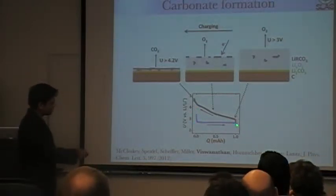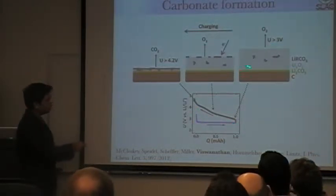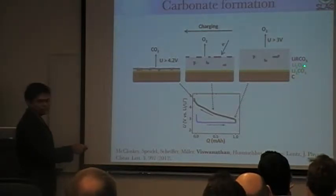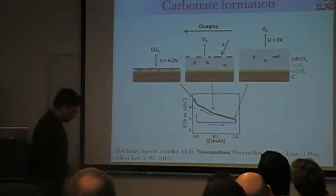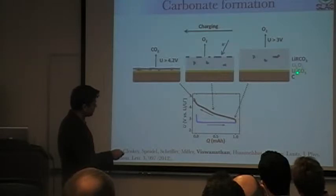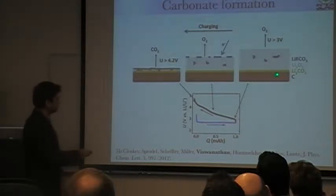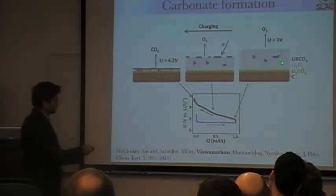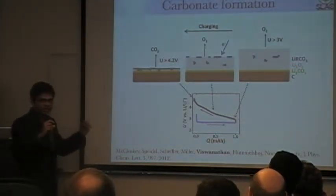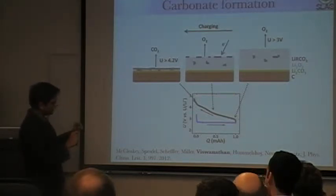So once you complete the discharge cycle, you have a nearly perfect reaction. You have almost all lithium peroxide, except for one thing. Lithium peroxide and carbon react to form a thin lithium carbonate layer. Very thin. The reason this is thin is because after this layer, you no longer have access to carbon. So it's self-killing. It's a very thin layer of lithium carbonate.